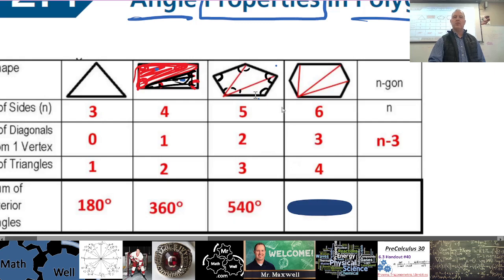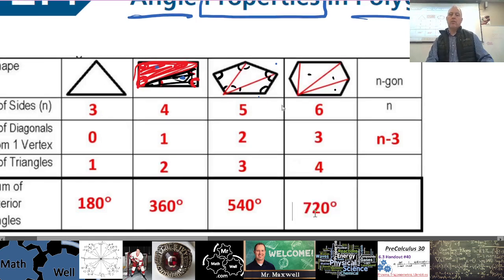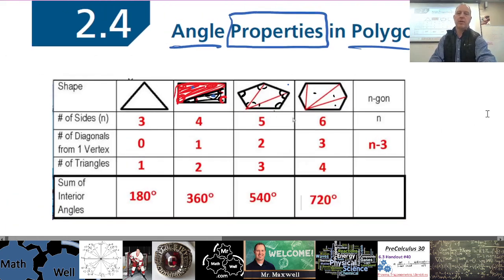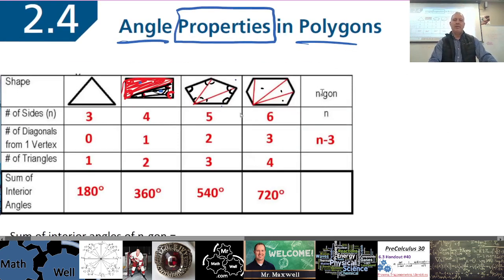The sum of the interior angles of a pentagon is 180 times three. That's 180 times one for a triangle, 180 times two for a quadrilateral, and 180 times three for a pentagon. For a hexagon with six sides, there are three diagonals making four triangles, so that's four times 180. Now for an n-gon — a polygon with n sides — we're going to generalize. An n-gon has n sides.